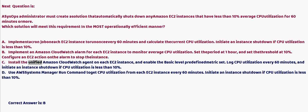Option C: Install the unified Amazon CloudWatch agent on each EC2 instance, enable the basic level predefined metric set, log CPU utilization every 60 minutes, and initiate an instance shutdown if CPU utilization is less than 10 percent. Option D: Use AWS Systems Manager Run Command to get CPU utilization from each EC2 instance every 60 minutes and initiate a shutdown if below 10 percent. The correct answer is B.